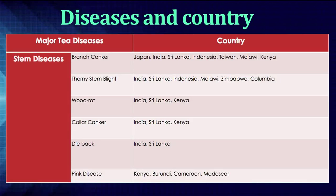Now, come to the stem diseases. The first one is branch canker, seen in countries like Japan, India, Sri Lanka, Indonesia, Taiwan, Malaysia, and Kenya. Then, another one is thorny stem blight, which is seen in India, Sri Lanka, Indonesia, Malaysia, Zimbabwe, and Colombia. Then, wood rot, which is seen in India, Sri Lanka, and Kenya.